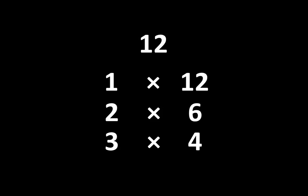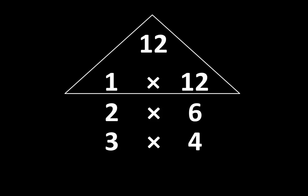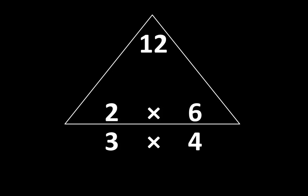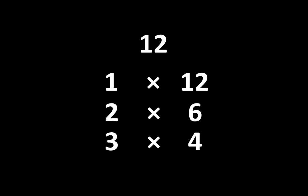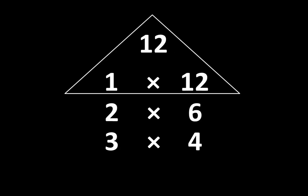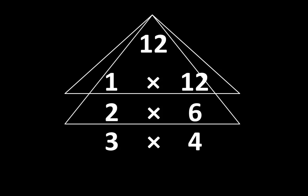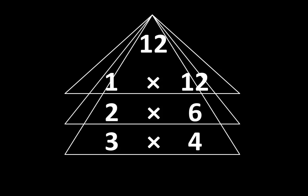We can also say that twelve is equal to three times four, and two times six, and one times twelve. Some people see these as separate ideas — they see this as one idea, this as a different idea, and this as still another separate idea. But others realize they are all connected. This idea is connected to this idea, which is connected to this idea. The idea is that these factor pairs are all connected to each other because they are all connected to twelve.